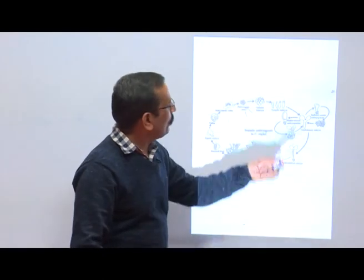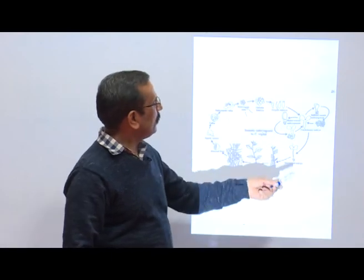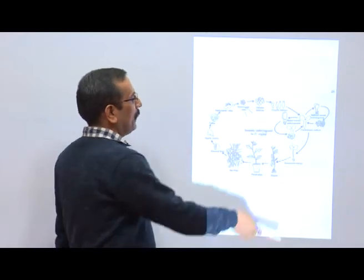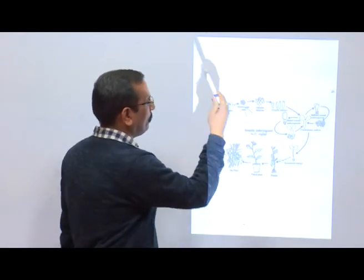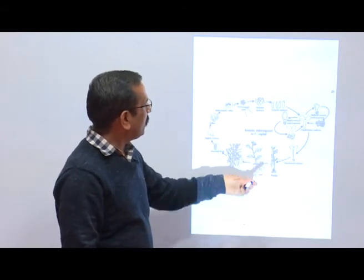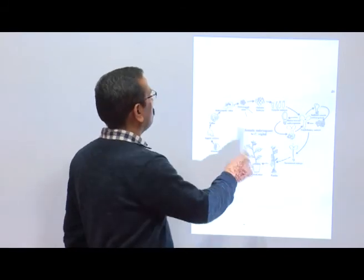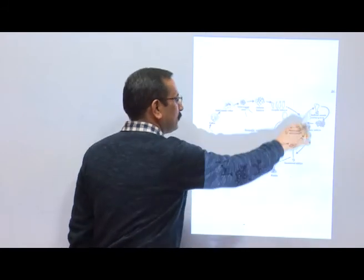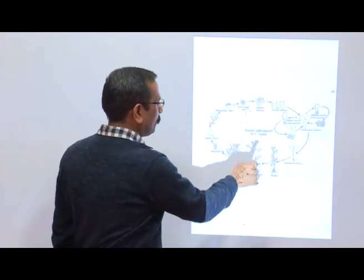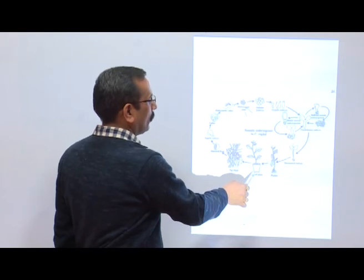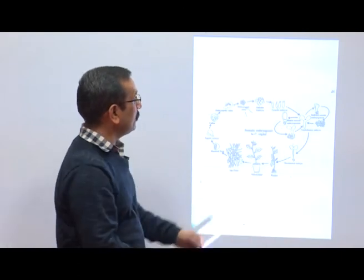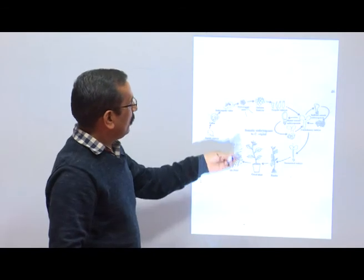The cotyledon stage embryo, after maturation, is germinated in hormone-free media and develops into plantlets. These plantlets undergo hardening and acclimatization — all these stages occurring in the culture room — and then the plantlet is transferred to a pot.